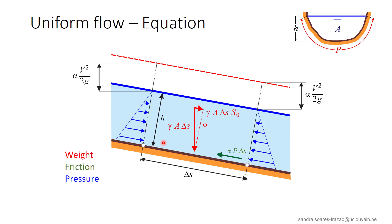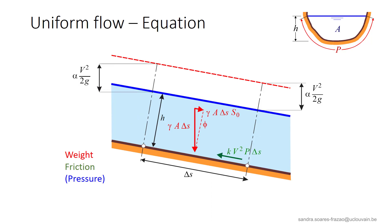Lastly, we have the pressure forces acting on both sides of the considered volume. As the channel is prismatic, the cross-sections 1 and 2 are the same, and the water depth is also constant, so the pressure forces on both sides cancel out. Finally, the situation to be considered is this one, and the balance of forces is written like this. In fact, the uniform flow is the result of an equilibrium between a driving force, that is the gravity along the bed slope, and a braking force, that is the friction along the bed and the walls of the channel.